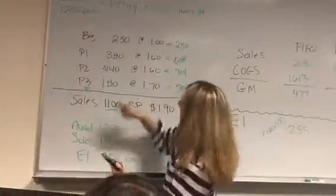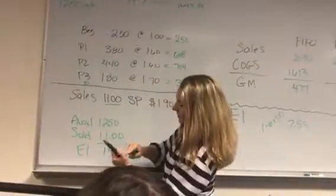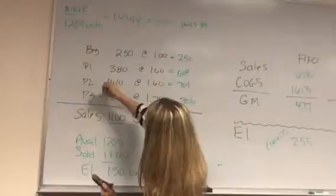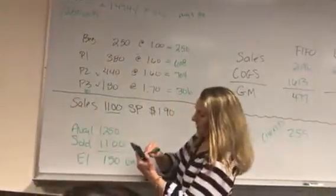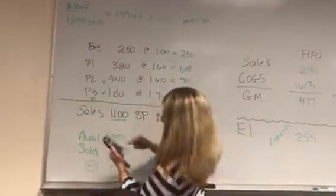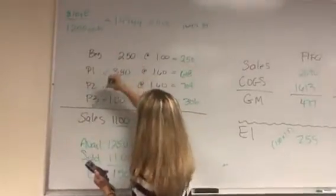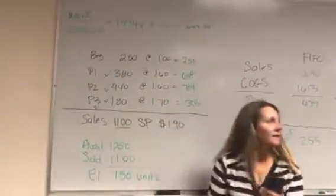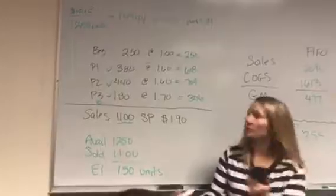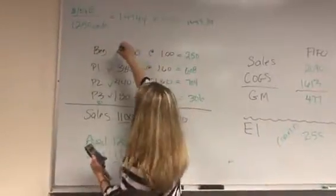So we have 180 plus 440 plus 380, which would put us up to 1,000 units. We need 1,100, so we need 100 more units, so we're going to split this last bunch.